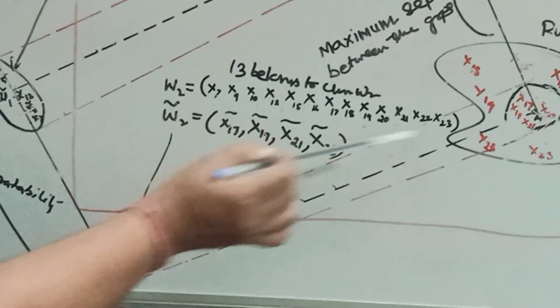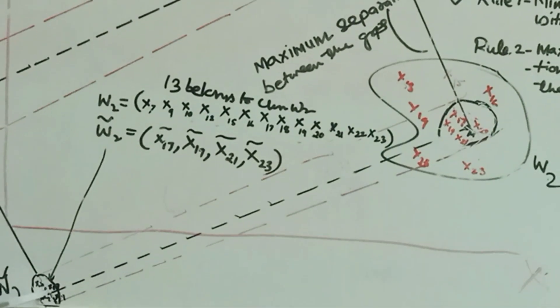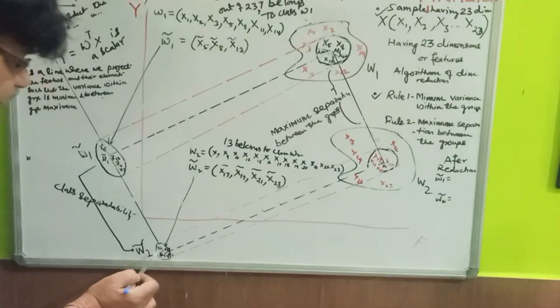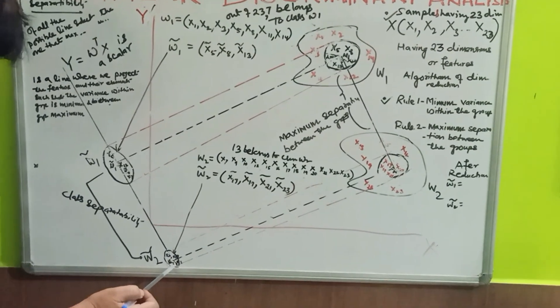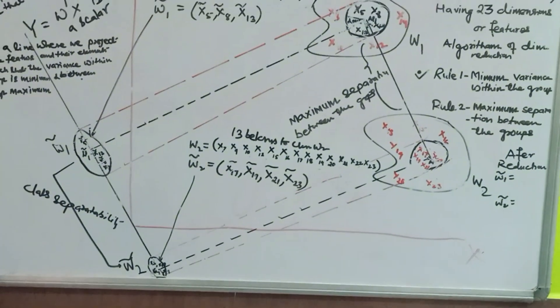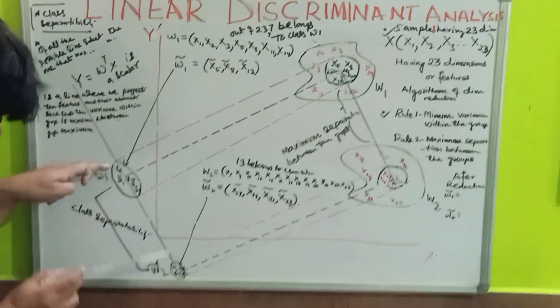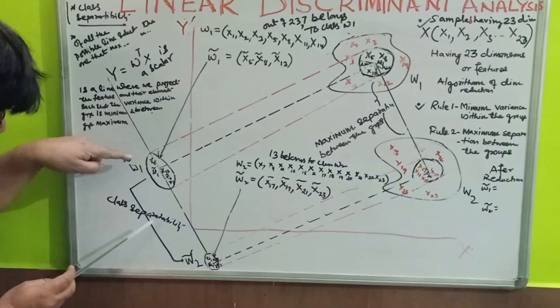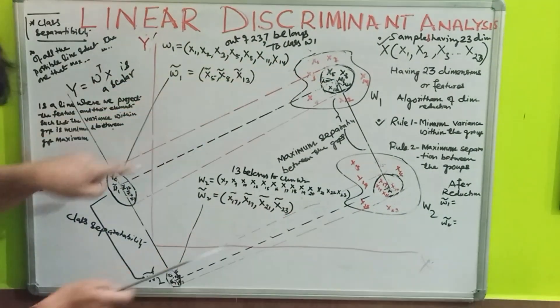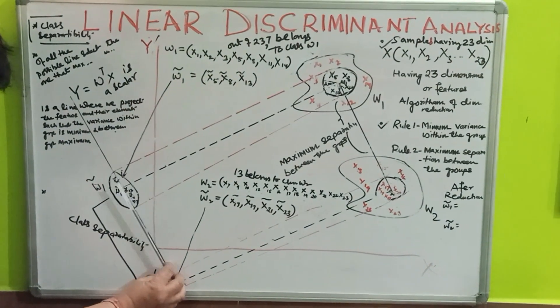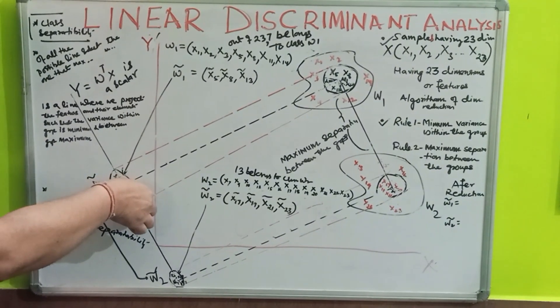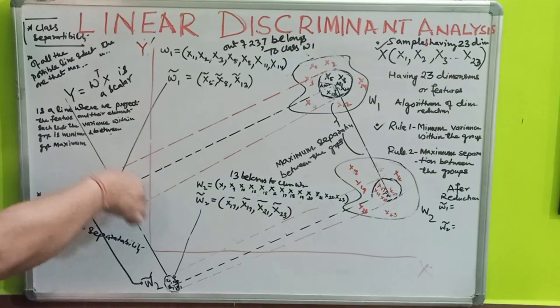And this curve has been created, and this curve contains projected mu2, say mu2 cap, and say the features inside it are X17 cap, X19 cap, X21 cap, and X23 cap. And you will see, over this subspace, there is the class separability is maximum. See, class separability is maximum, and the separability or the variance within the group is minimum.